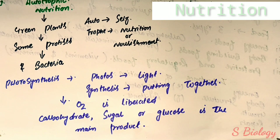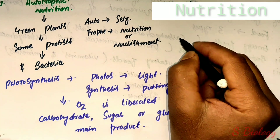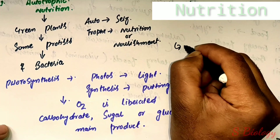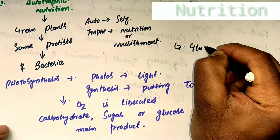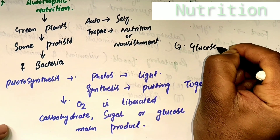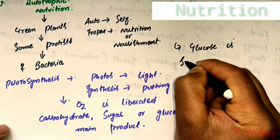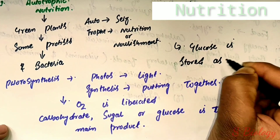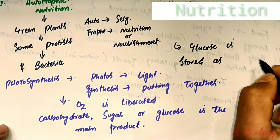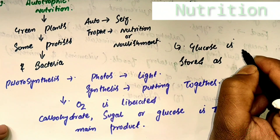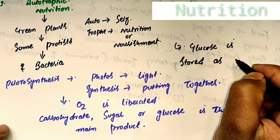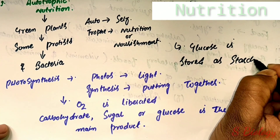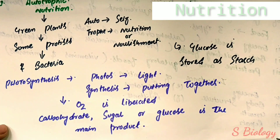To summarize autotrophic nutrition: autotrophs are green plants that are self-dependent and manufacture their own food. Examples include green plants, some protists, and some bacteria. They produce their food by the process of photosynthesis.